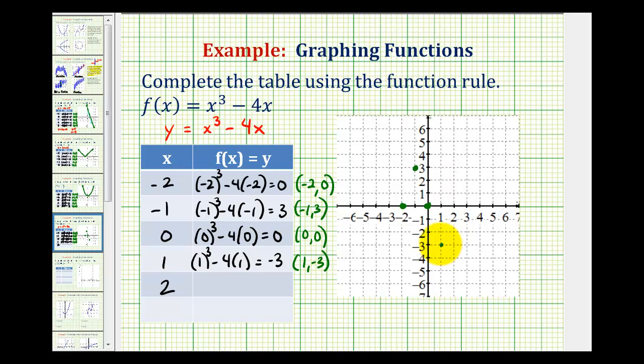And then we have x = 2, so we have 2³ - 4(2). It's going to be 8 - 8, which is 0. So we have the point (2, 0), which is this point here.